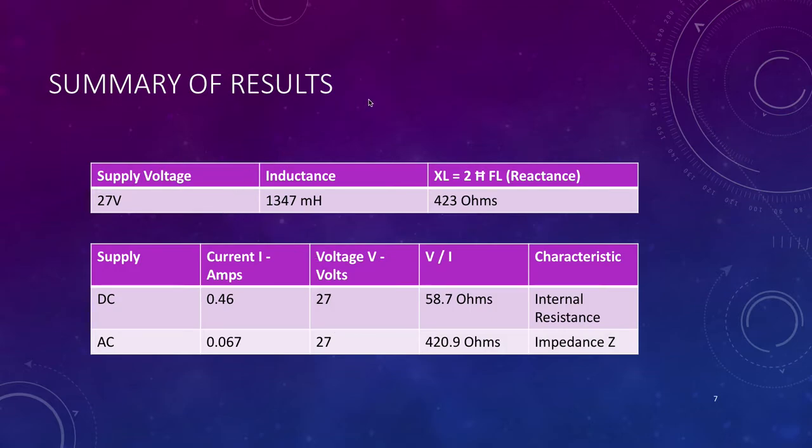Let's look at the results I've put into this table. My supply voltage was 27 volts. My inductance was 1347 millihenries to be exact, and I calculated my reactance with the formula 2πfL, which gives me 423 ohms. In DC, I had a current of 0.46 amps and a voltage of 27 volts. To calculate the DC resistance: volts divided by current, giving me about 58 ohms.